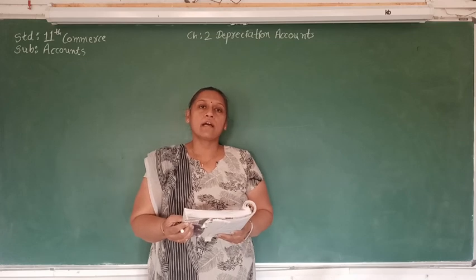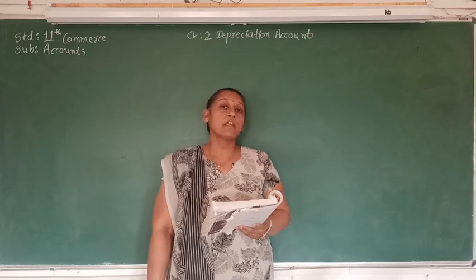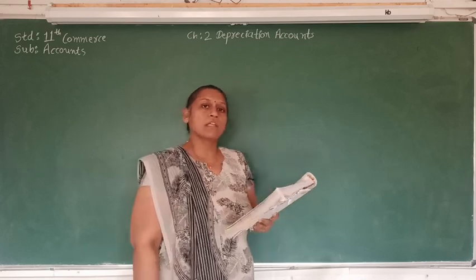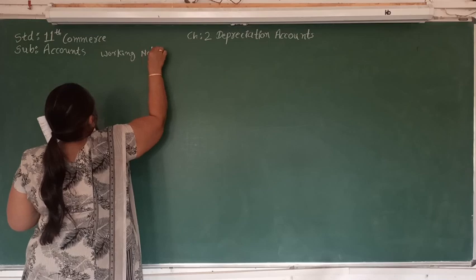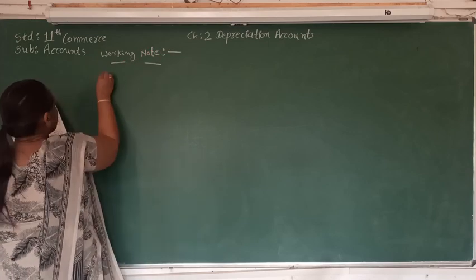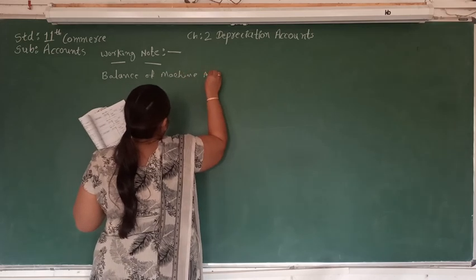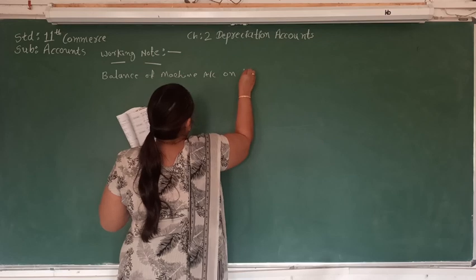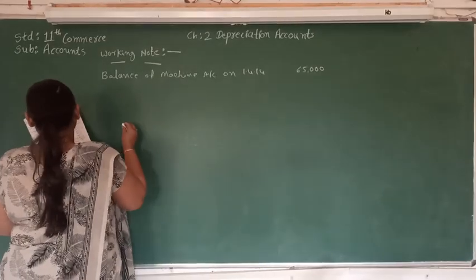So here the machine is going to be sold after 6 months. They are asking us to pass the necessary journal entry and prepare the machine account in the books of the company. Before we pass the journal entry, let's prepare the working note for calculation of selling price. Balance of machine account on 1st April 2014 is Rs. 65,000. The same machine is sold on 30th September 2014. Before we sell the machine, we have to calculate the depreciation for 6 months.